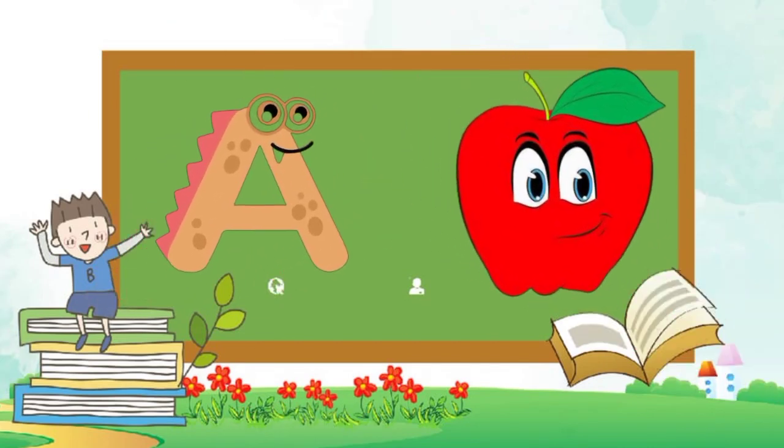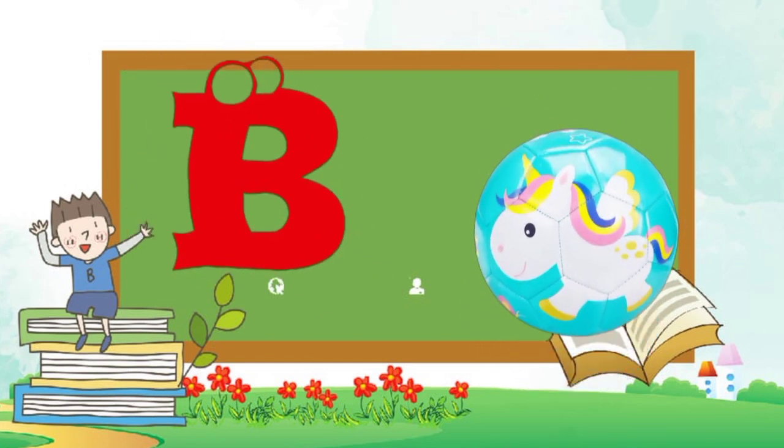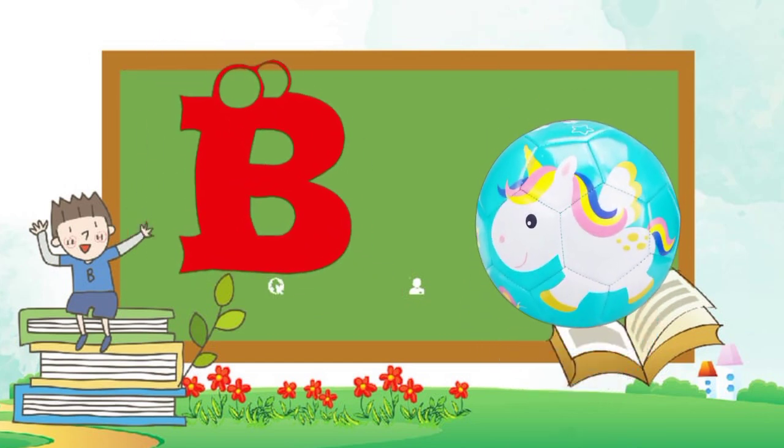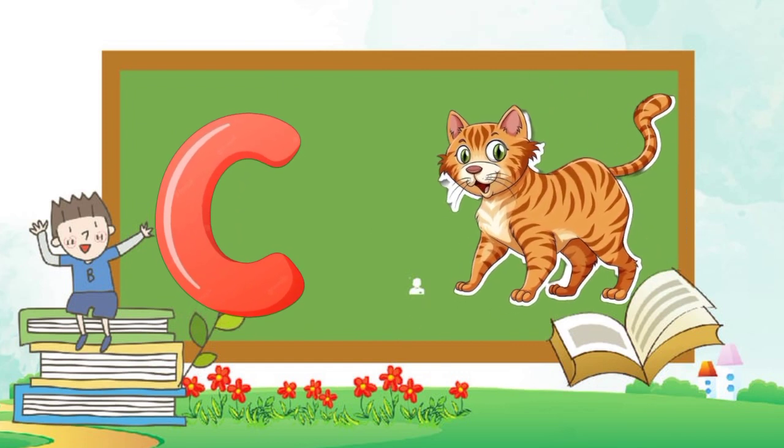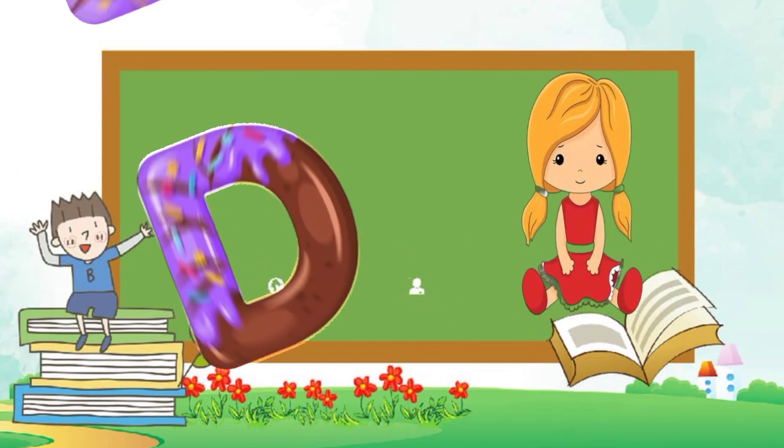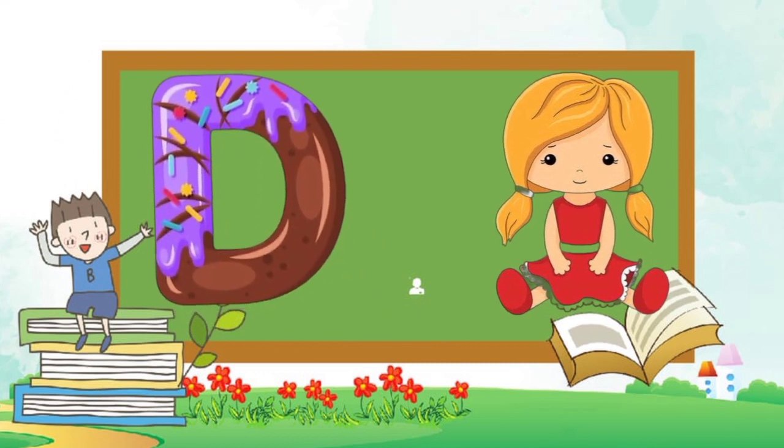A is for apple, a-a-apple. B is for ball, b-b-ball. C is for cat, c-c-cat. D is for doll, d-d-doll.